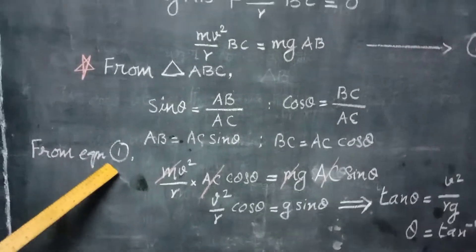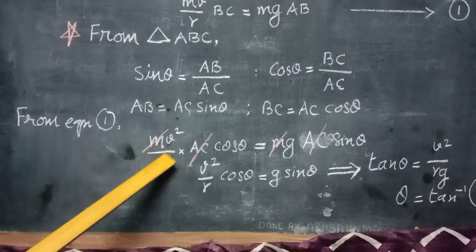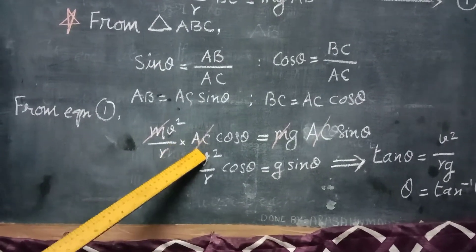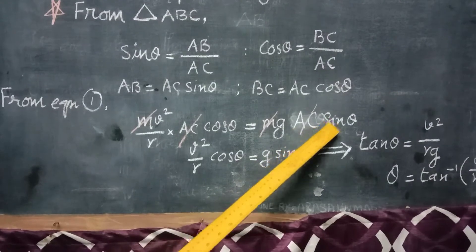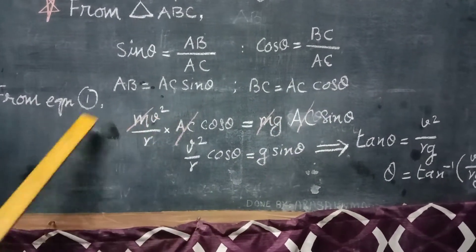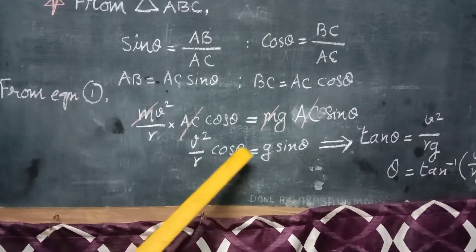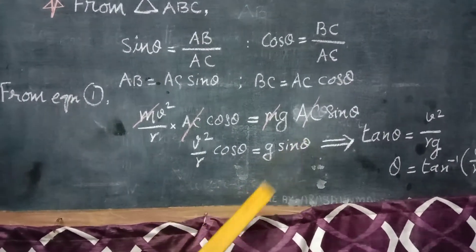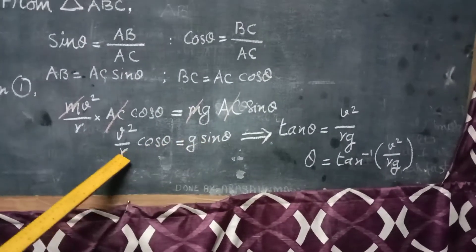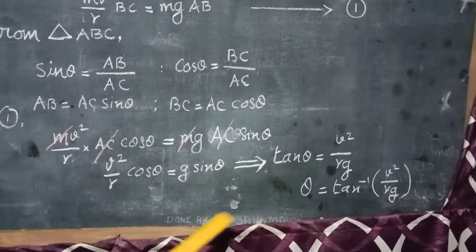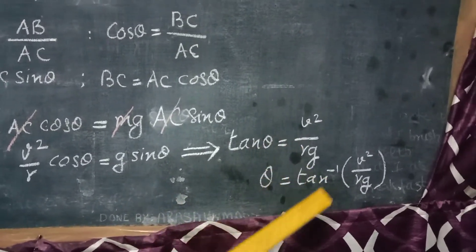Substituting into equation 1: Mv²/R · AC·cos θ = Mg · AC·sin θ. Canceling common terms gives V²/R · cos θ = g·sin θ, and rearranging yields tan θ = V²/Rg.